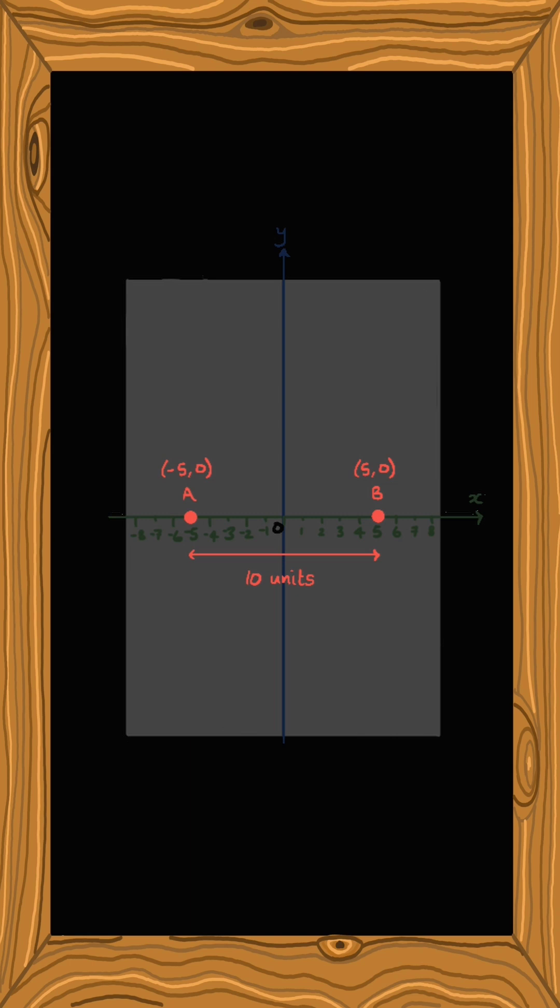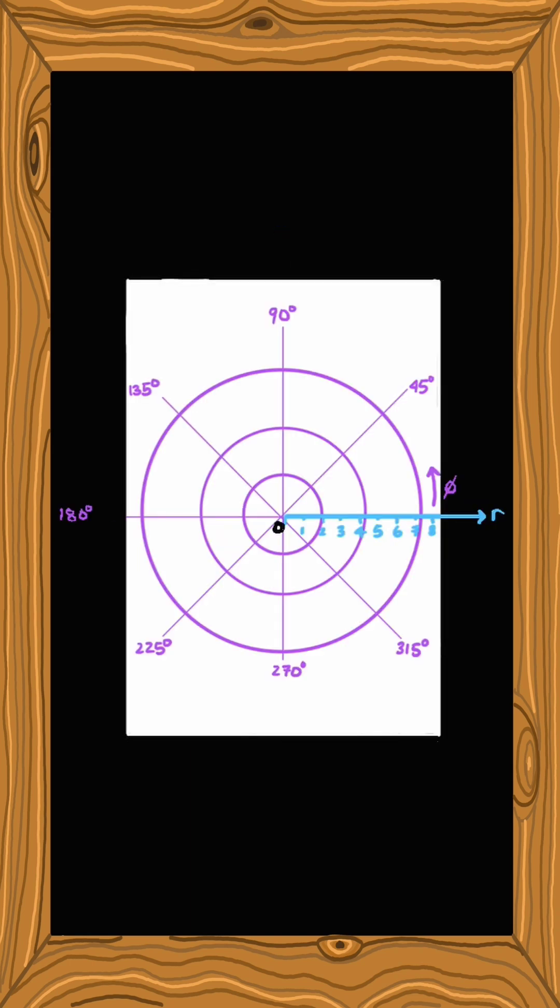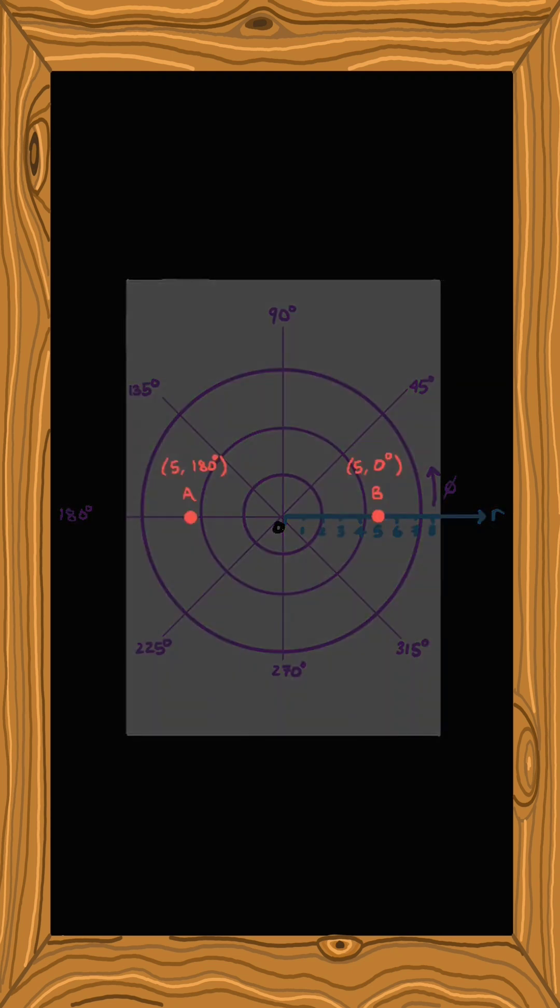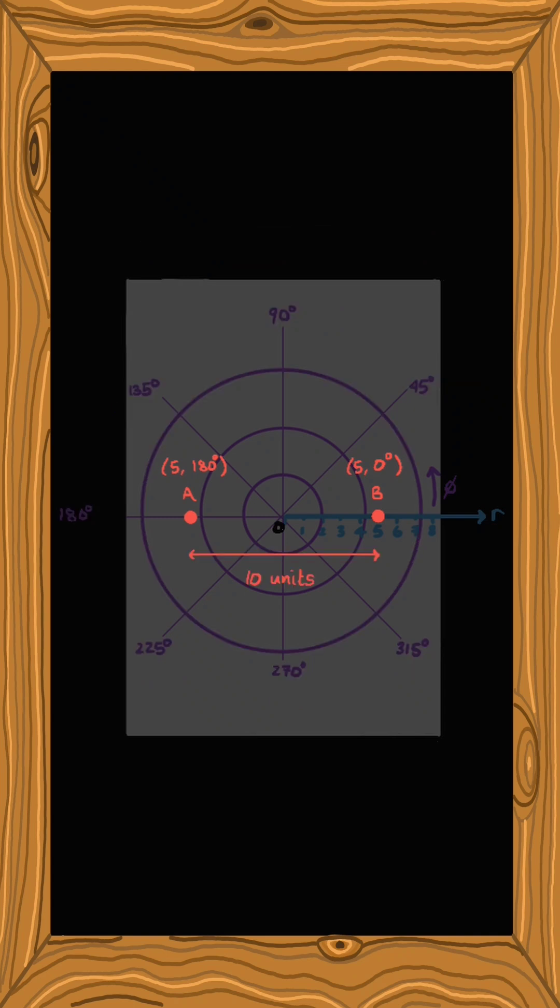We could instead choose to impose a different coordinate system on the piece of paper, a polar coordinate system. In our r phi coordinates, the same points from earlier now have coordinates 5 and 0 degrees, and on this side 5 and 180 degrees. Or we can work in radians for the angle. We can use the formula for working out distances between points in polar coordinates to figure out how far apart they are.